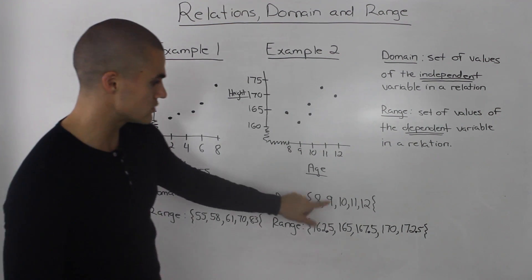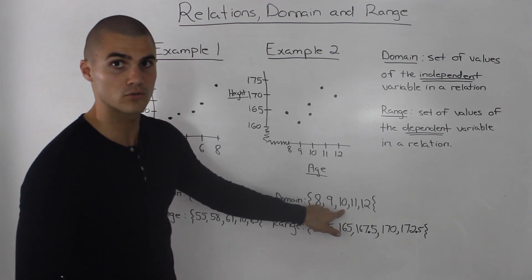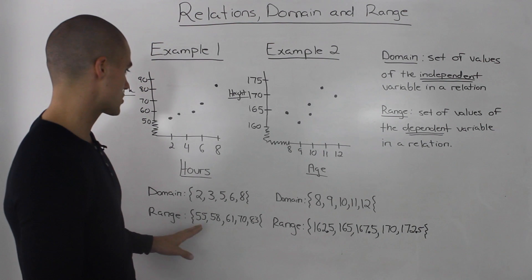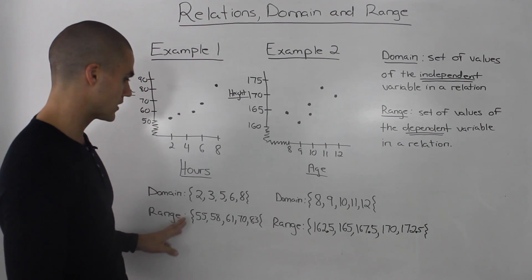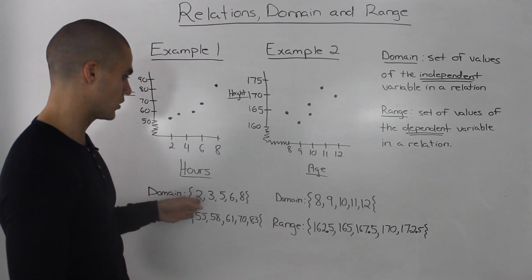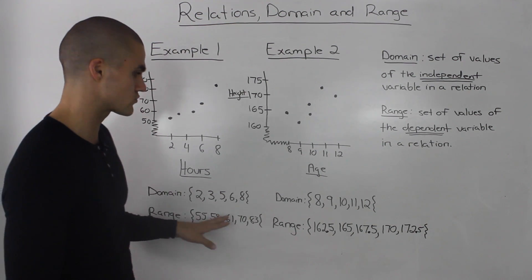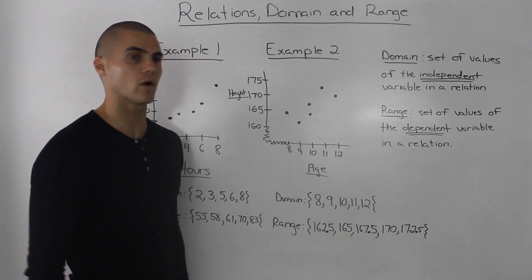There are two coordinates that have an x value of 10, but when we write the domain, it only appears once. So again, when you're writing the domain and range out, it's always from lowest to highest, and you always write out the values just once.